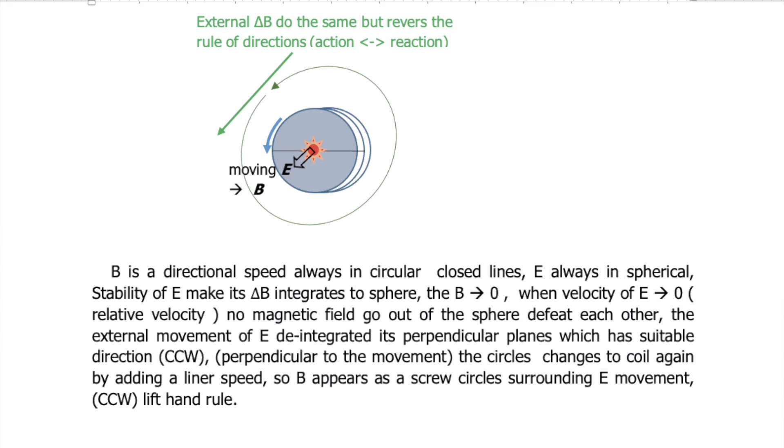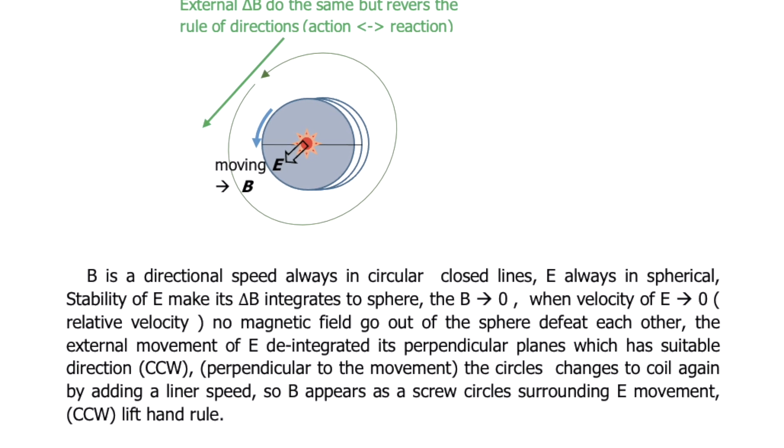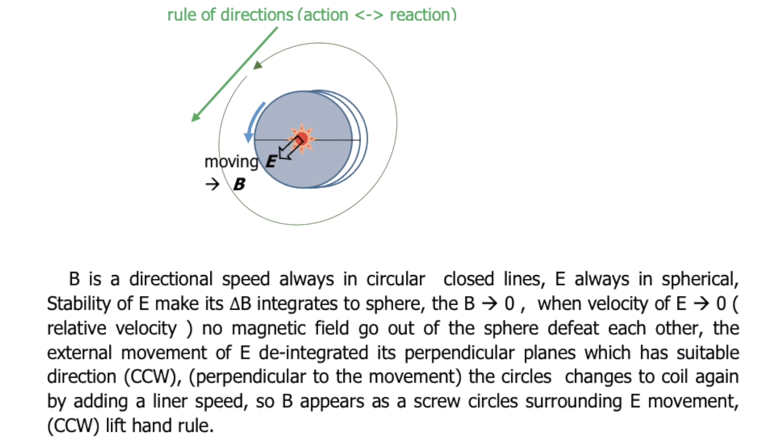The external movement of E disintegrates into perpendicular planes which have a suitable direction — counterclockwise, perpendicular to the movement. The circles change to a coil again by adding a linear speed, so the magnetic field P appears as crew circles surrounding a movement counterclockwise by the left-hand rule. So any E field has its magnetic circles around it.